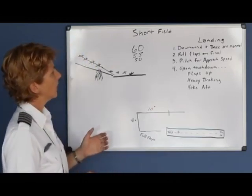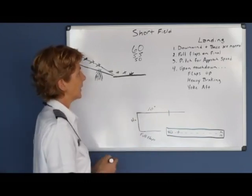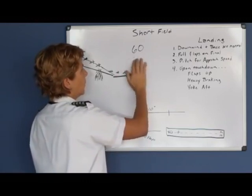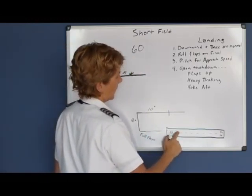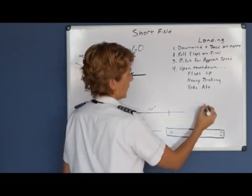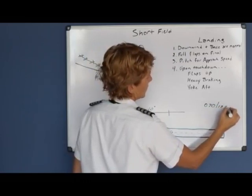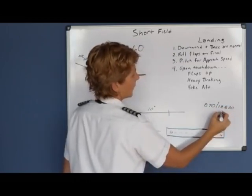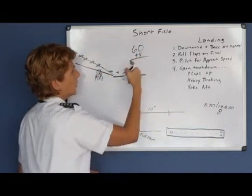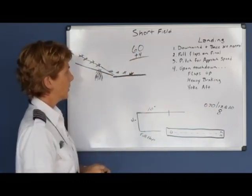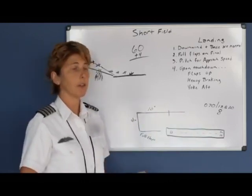The same rules for gusty conditions on approach also apply to the landing. If the winds were, say, 070 at 12 gusting to 20, the gust factor would be 8, so you would add plus 4 — half the gust factor — to your approach speed to maintain a safe speed. Don't forget to add half your gust factor.